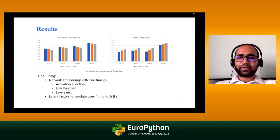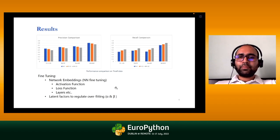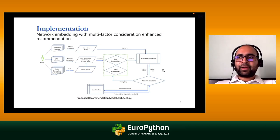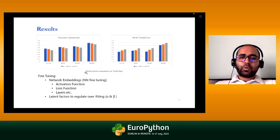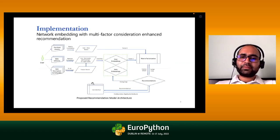Even when increasing the coverage of recommendations, this method shows great accuracy in the top recommendations it makes. For fine-tuning: since the architecture uses both matrix factorization and neural networks, all applicable fine-tuning parameters apply — latent factors for matrix factorization, and activation functions, loss functions, and different layers for the neural network component. We applied both to get optimal results from this recommendation system.